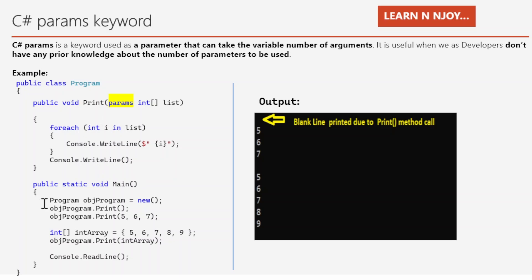In the Main method, I have instantiated the Program class and I am calling obj.Print. If you notice, I did not pass any argument, and it is still valid because a params parameter can expect zero or more arguments. When calling without any parameter, it will go and print the console.WriteLine statement, so basically one blank line gets printed. In the next statement, I called the print method passing five, six, seven as comma-separated values, so those values will be iterated and printed one by one.